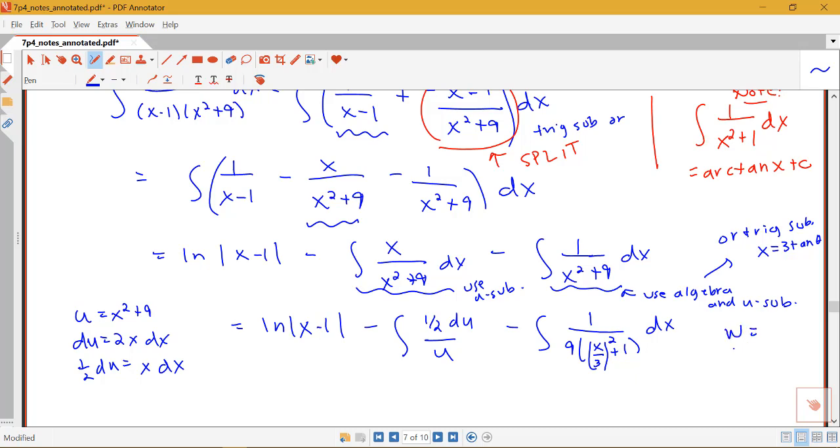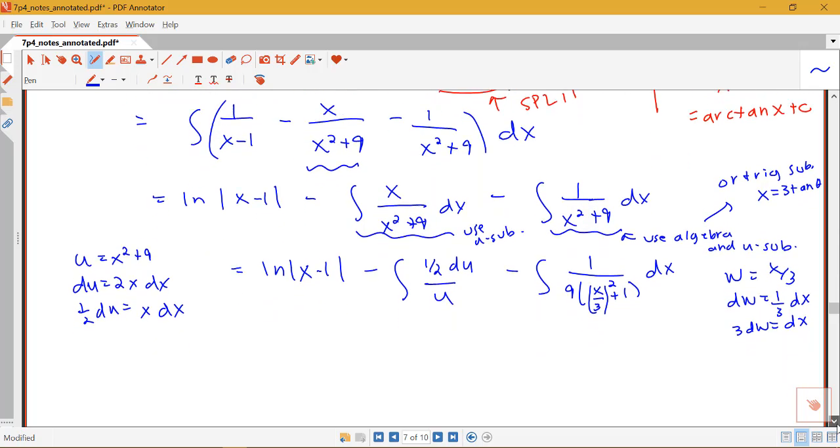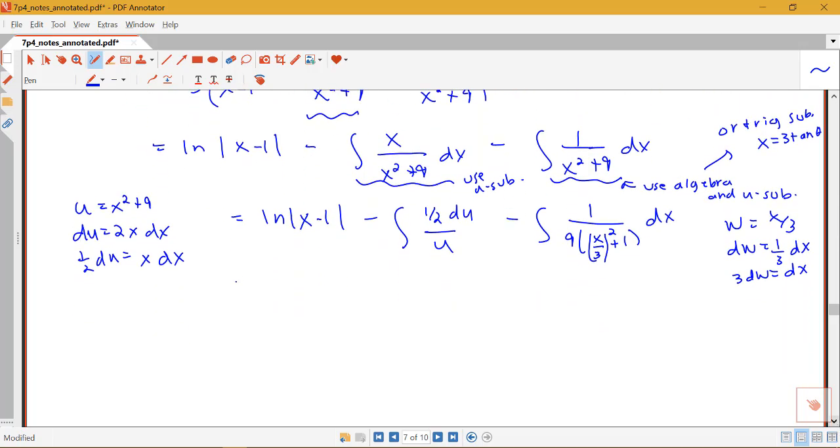So if I let, just choose another letter, let w be x/3. Then dw = (1/3)dx or 3dw = dx. So let's see what this gives us. So we've got our log|x-1| minus (1/2)log|u| minus (1/9) times the integral of 1/(w²+1) where my dx is becoming 3dw. Or I can pull that 3 out in front here. So I've got this 3/9.